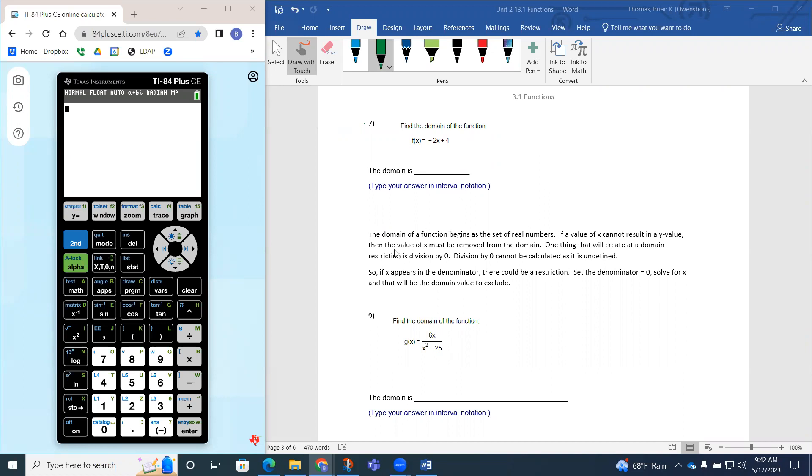So some things to pick up on is this. For a function, the domain of a function always begins as a set of real numbers. In other words, we're assuming every number out there will work. So that means we're talking whole number math, we're talking about negative number math, we're talking about fractions, we're talking about decimals, and we're talking about radicals. Those are all what we call real numbers. Any number that looks in one of those categories is called a real number.